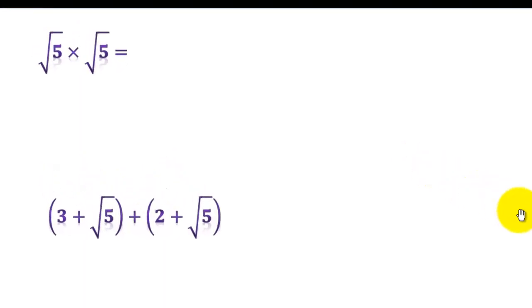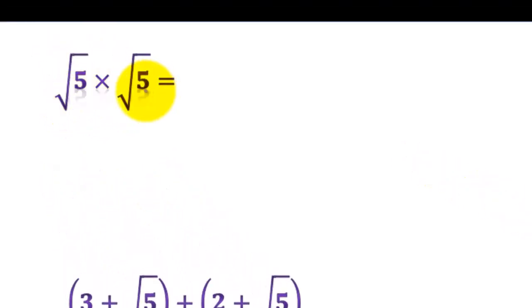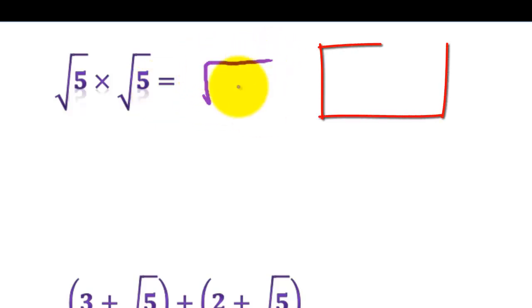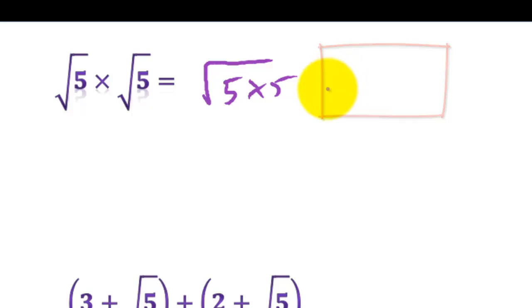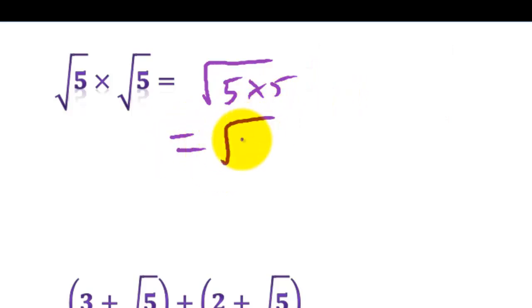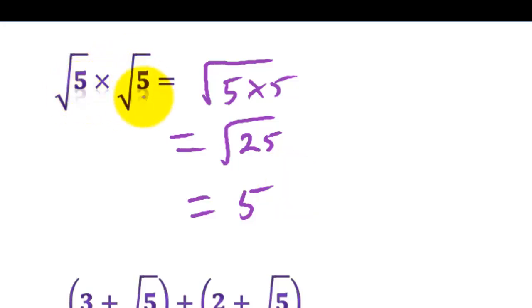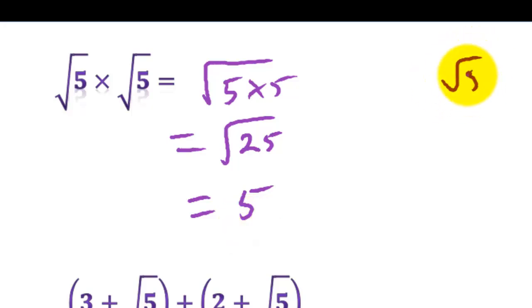Our first question is the square root of 5 times the square root of 5. You can think of that as 5 times 5 square rooted, which equals the square root of 25, which equals 5. Or remembering the rule that square root of x times square root of x equals x, another way to think of this is as the square root of 5 squared, which just equals 5.